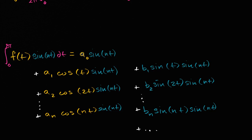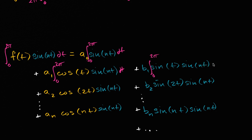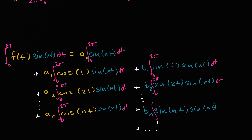So taking the integral of the right-hand side, the definite integral from zero to two pi dt is applied to every term — zero to two pi dt for each term — doing this for every term in this Fourier expansion. Now this is where some of that integration work is going to be valuable.